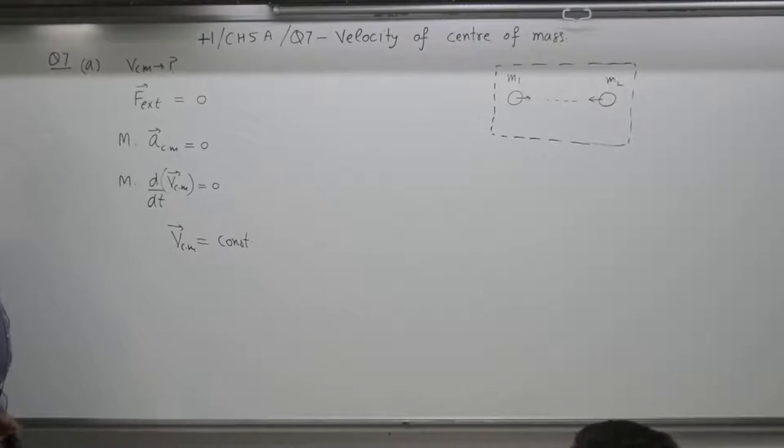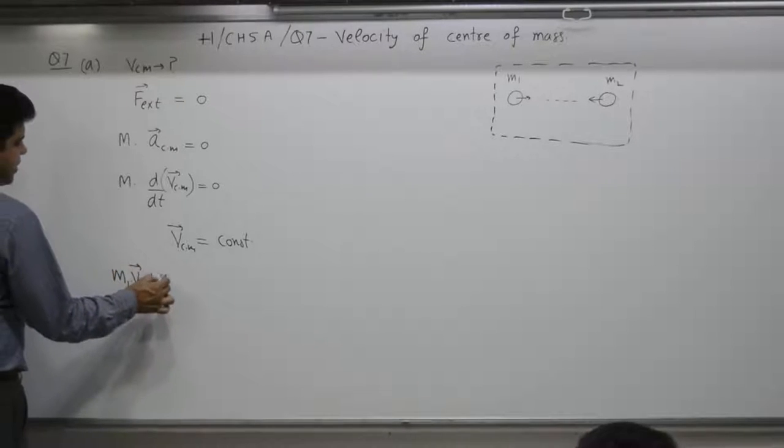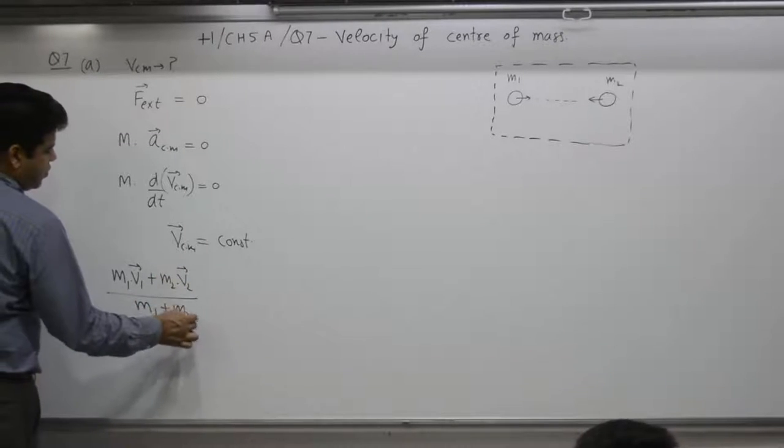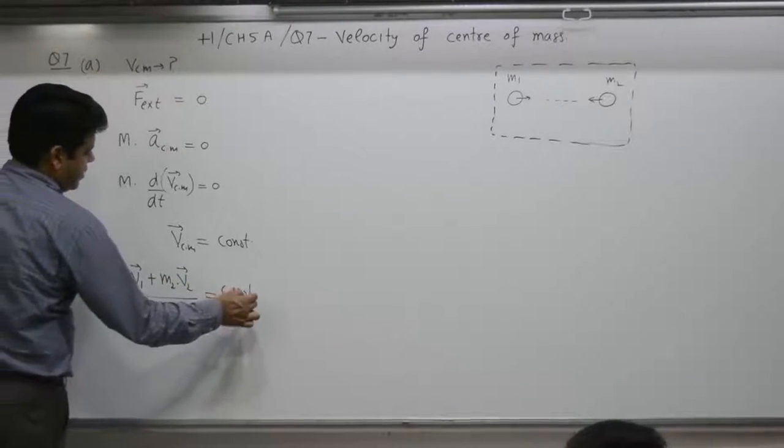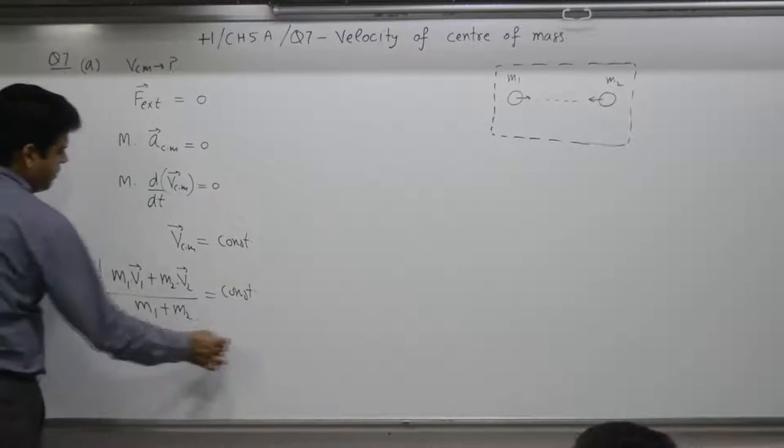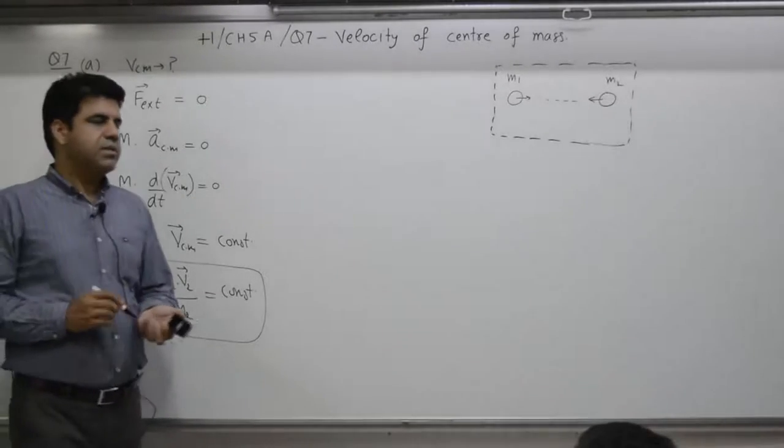For a two particle system, we have already covered. Velocity of center of mass is M1 V1 plus M2 V2 divided by M1 plus M2 is a constant. Because M1 and M2 is constant, M1 V1 plus M2 V2 is equal to constant.